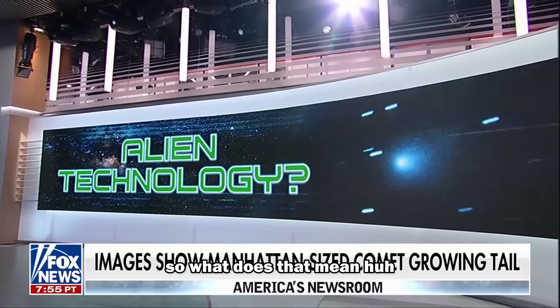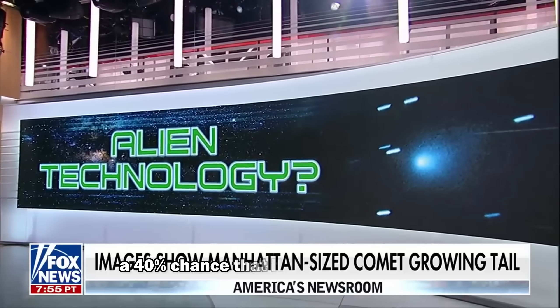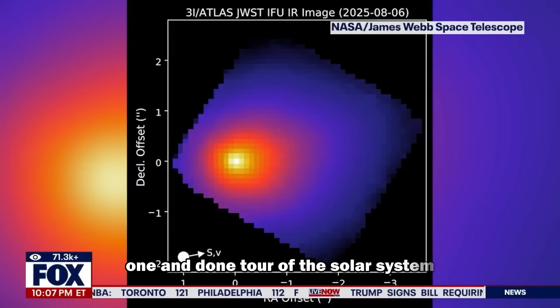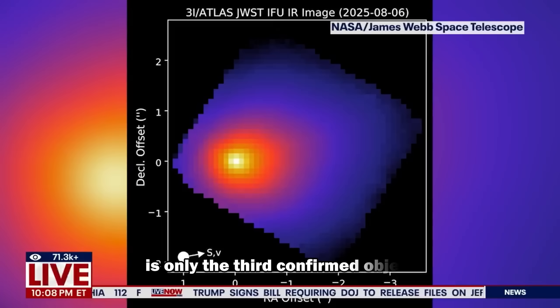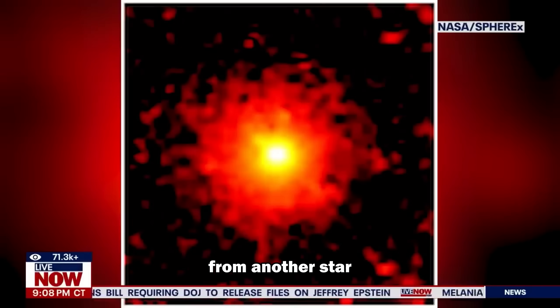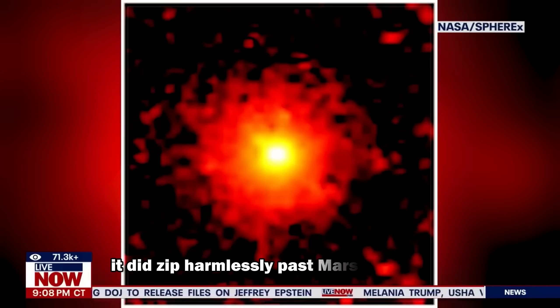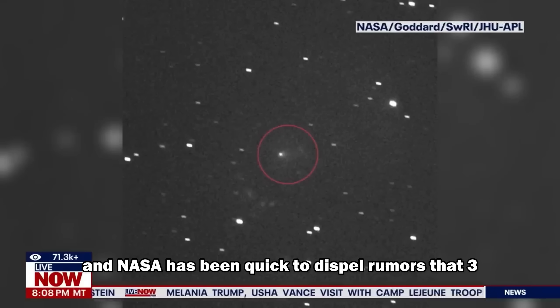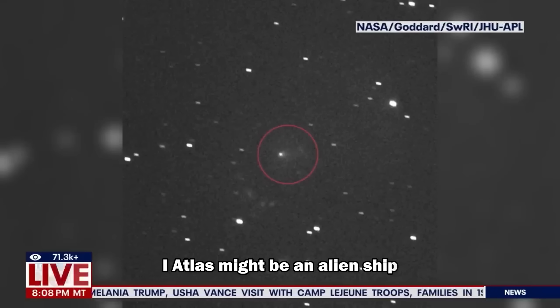So what does that mean? My next guess is there's a 40% chance that it is alien technology. Atlas is the comet that's making a quick one-and-done tour of the solar system. 3i Atlas is only the third confirmed object to visit our corner of the cosmos from another star. It did zip harmlessly past Mars last month, and NASA has been quick to dispel rumors that 3i Atlas might be an alien ship.